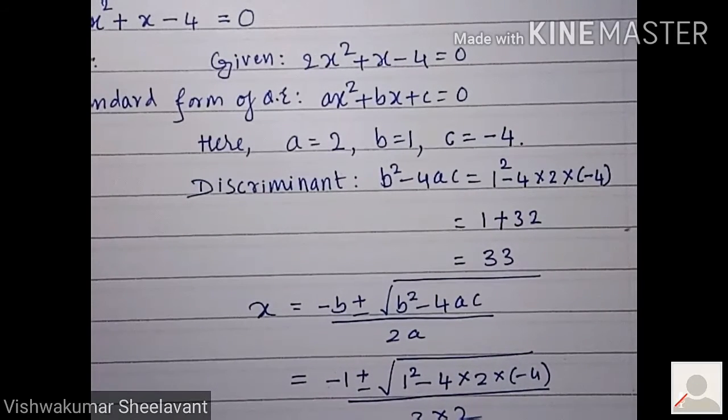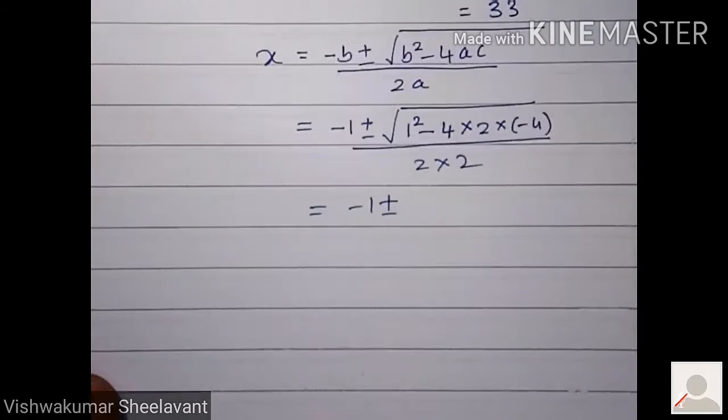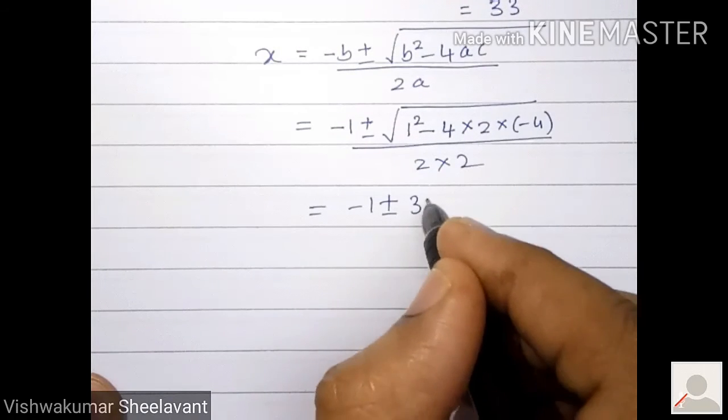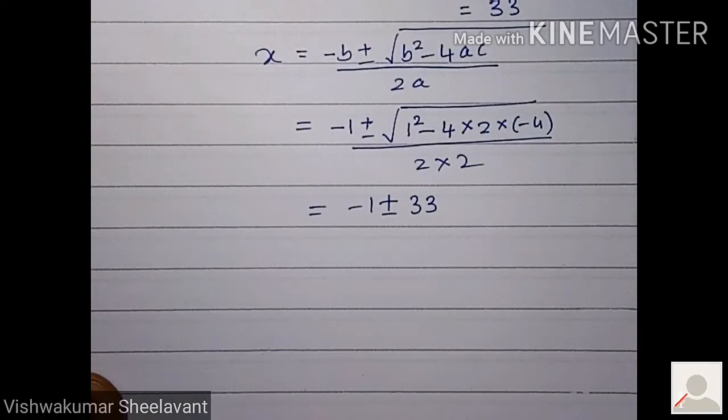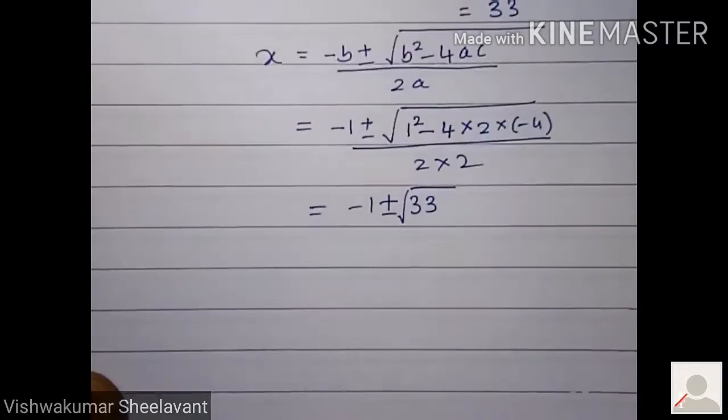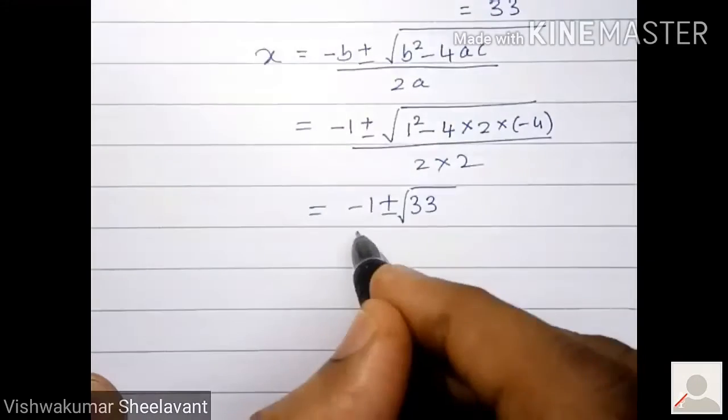Minus 1 plus or minus, what is this? This is 33 under root, divided by 4.